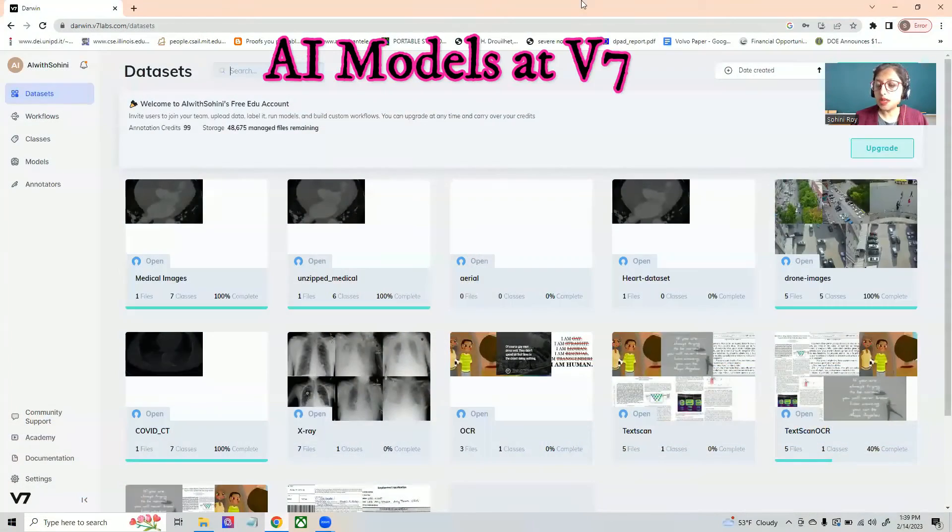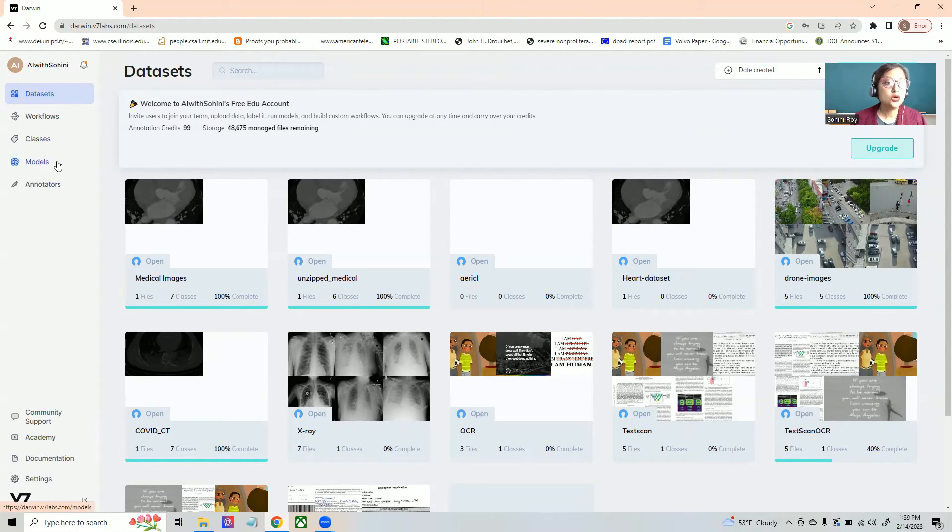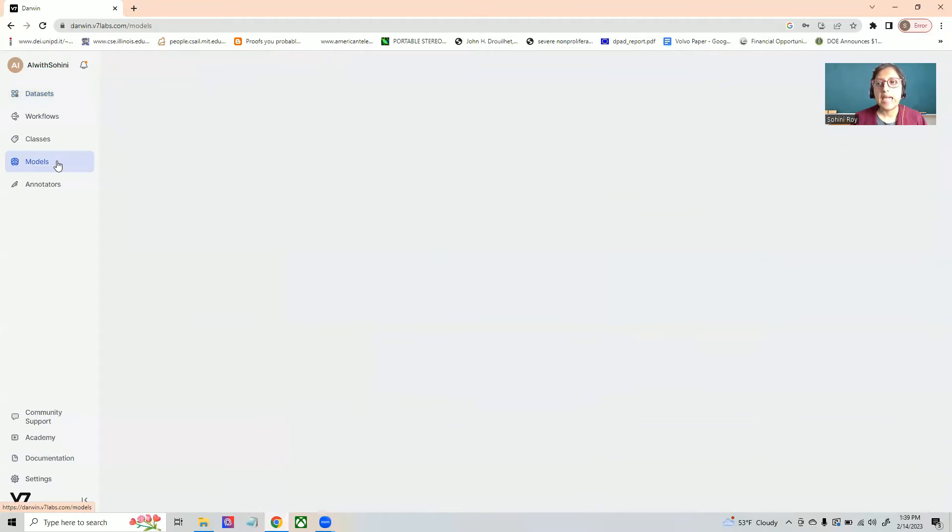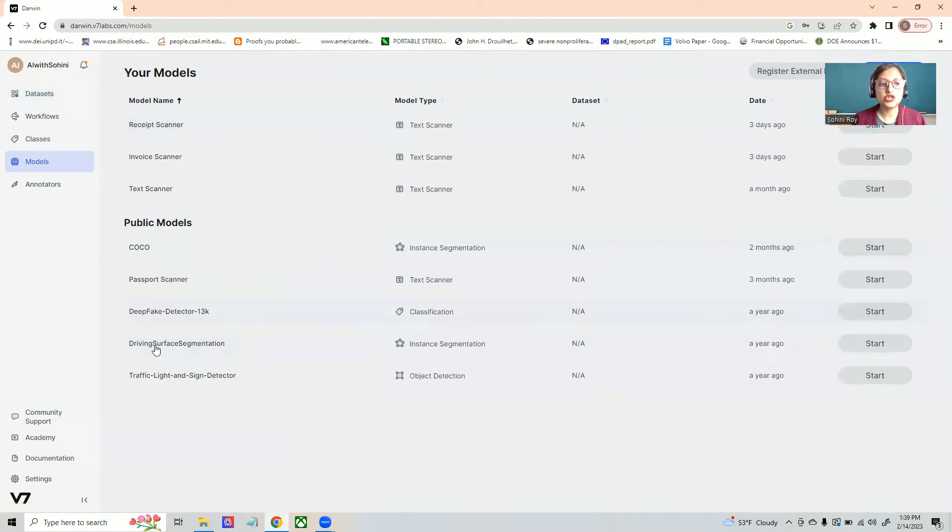So let's start with understanding how the models actually work. So if we go to V7, we go straight to the model section. And here in the model section, you can actually see there are multiple publicly trained models that's already available out there.